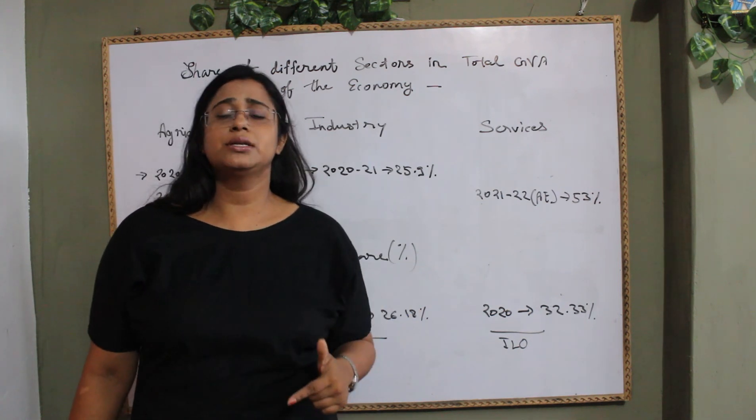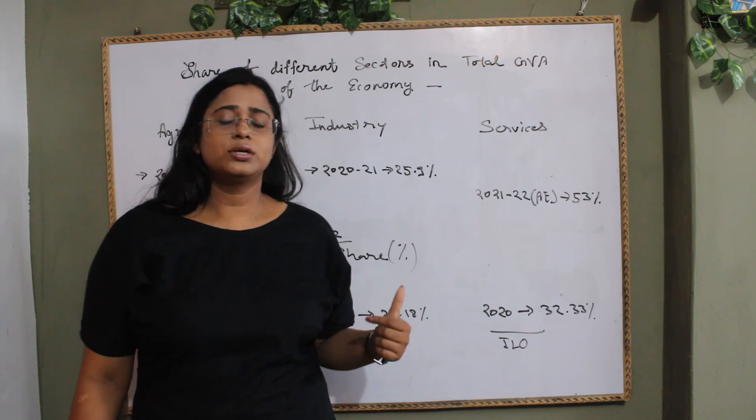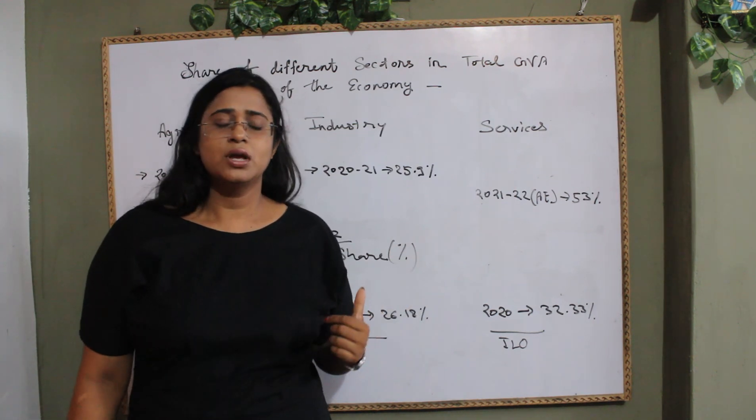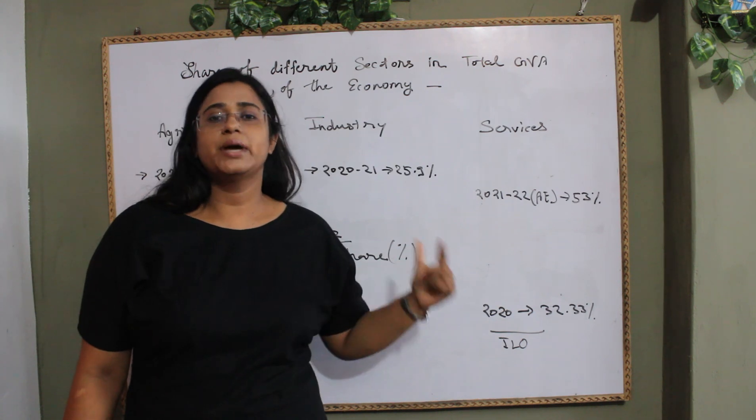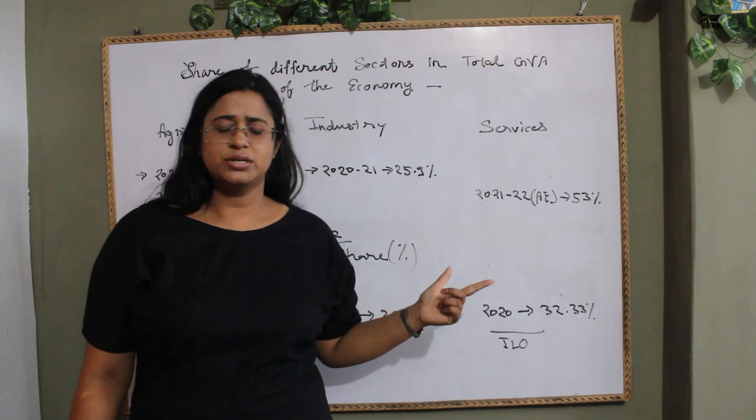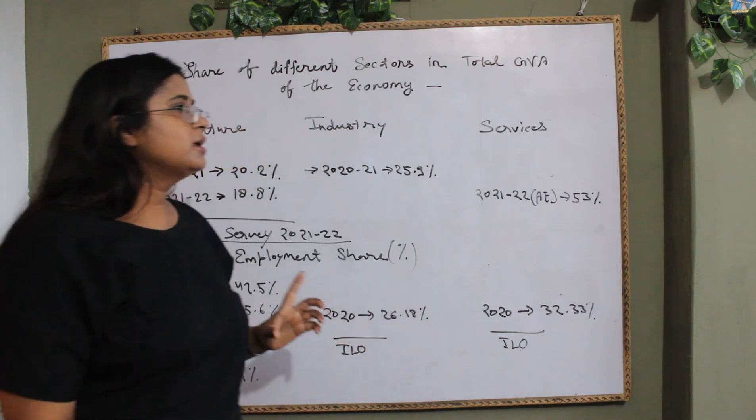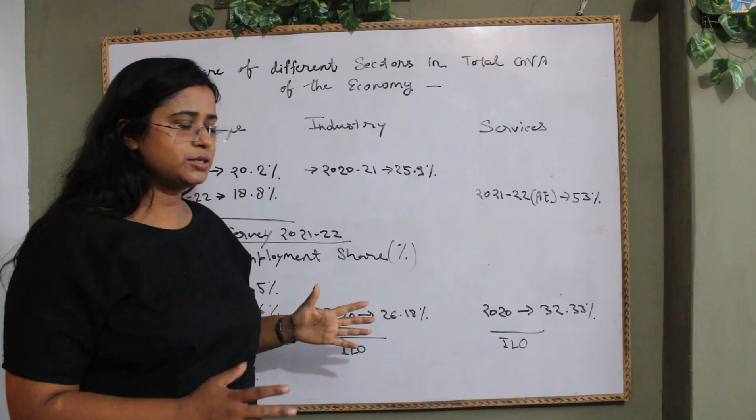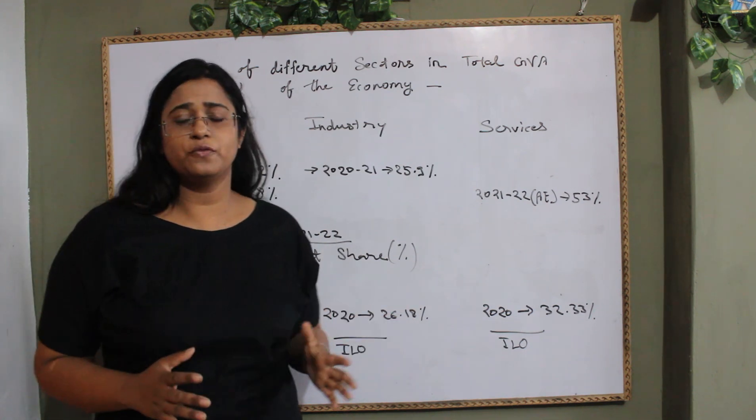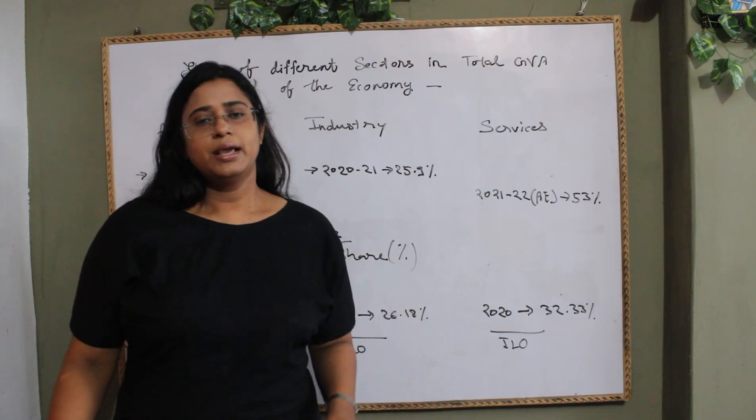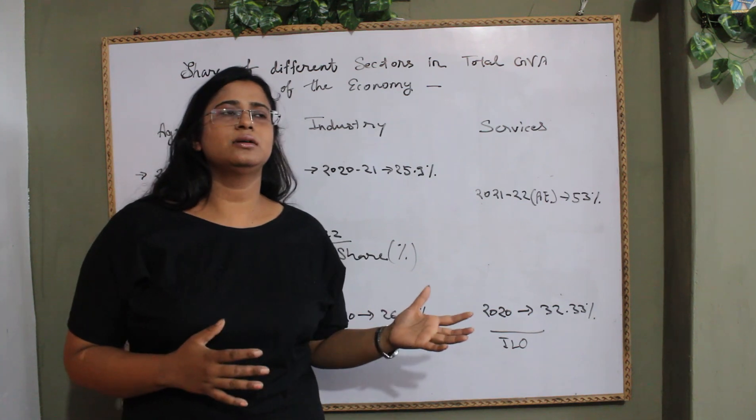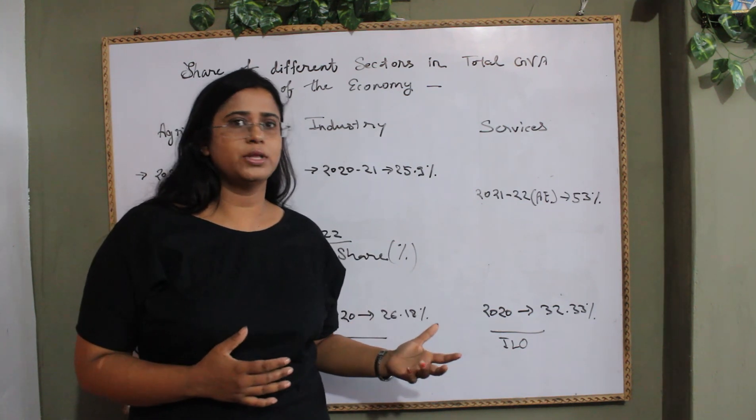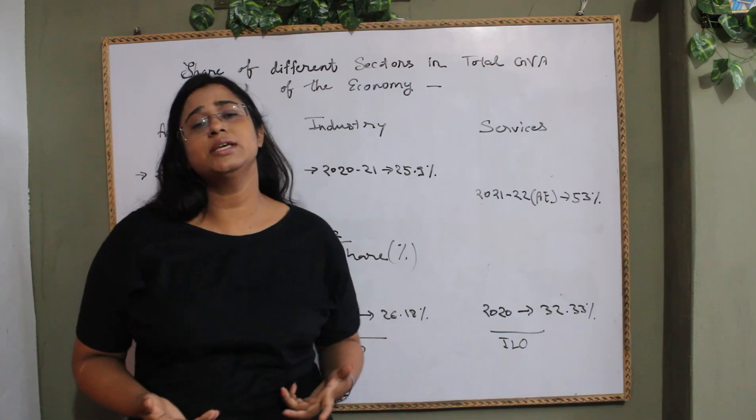And, that is the constraint because of which the agricultural labor or agricultural workforce don't migrate very frequently to the industrial sector and the service sector. Second is the accommodation problem. You know that mostly the population of India is living in the rural area. So, accommodation is very cheap or without any cost. They are mostly living with their families. They don't have to pay for that.